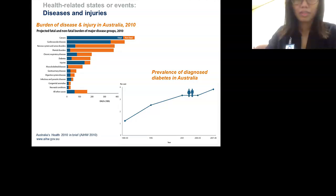Because both deaths and hospital cases have been cause-coded in much the same way, that's made it easier to produce things like the burden of disease diagram. This is a figure from a version of the burden of disease and injury project done in Australia, using the Global Burden of Diseases method. The unit across the horizontal axis is DALYs — Disability Adjusted Life Years — a metric that allows summing and comparison of the fatal and non-fatal aspects of the burden of ill health.